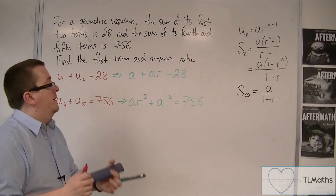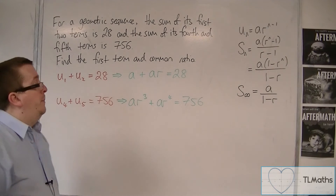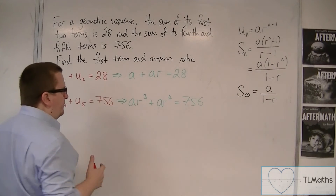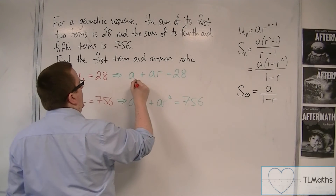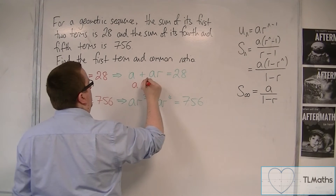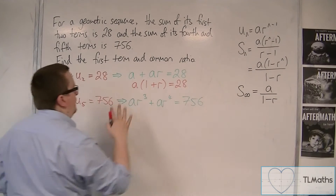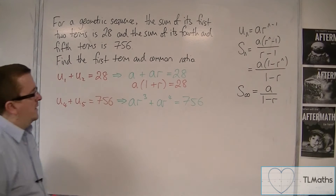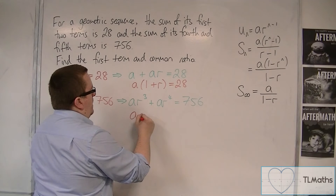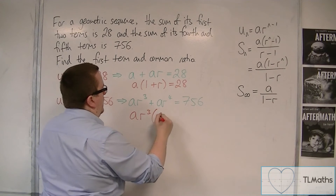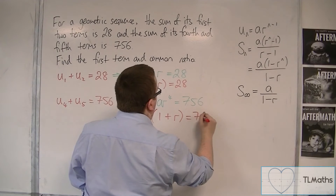So what we can do here is, looking at these two equations, I'm going to factorise both of them first. So I'm going to factor the top equation: a times (1 + r) is equal to 28, factorising the left-hand side. And here I'm going to factorise the left-hand side of the second equation and get ar³(1 + r) equals 756.